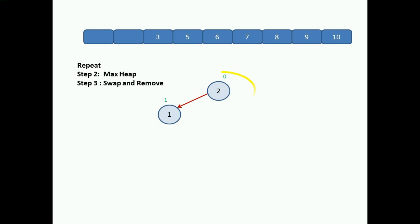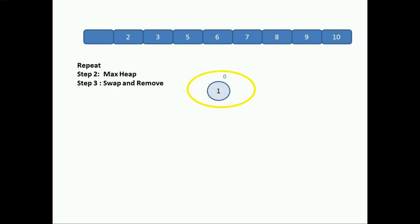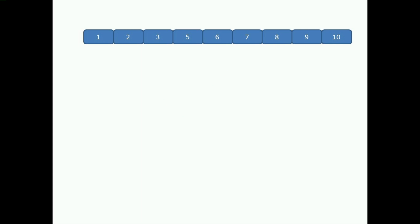Now we have parent 2 with only one left child 1 — it is already a max heap as 2 is greater than 1. Step 3: swap root with last node — 2 and 1 get swapped, remove the last node; 2 is sorted. Now only 1 element remains, so we simply put it in the list — 1 is sorted. By repeating these steps we obtain the list fully in sorted order using the heap sorting algorithm. Thank you for watching; if you liked this video, please like and subscribe.